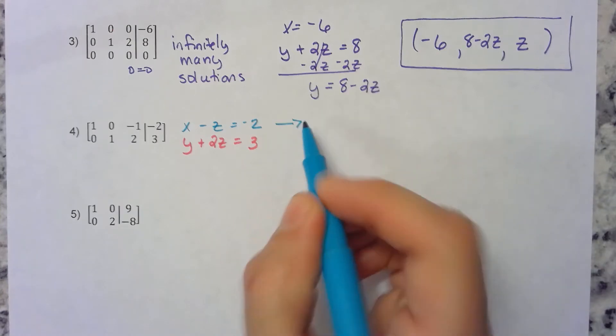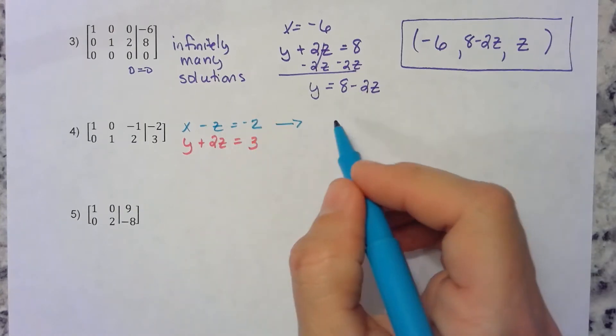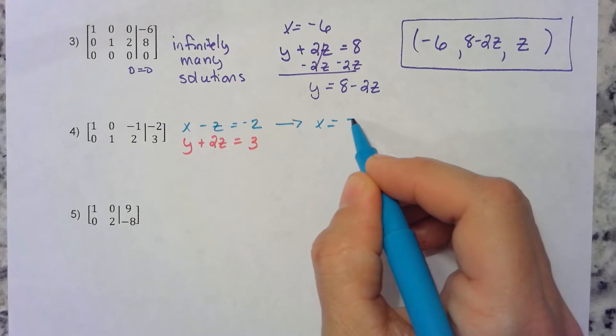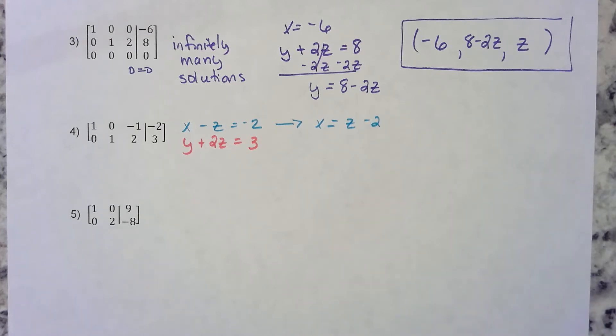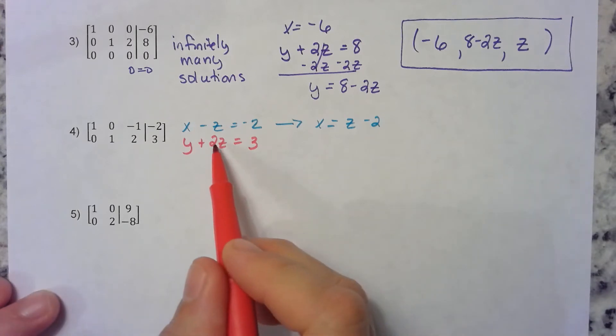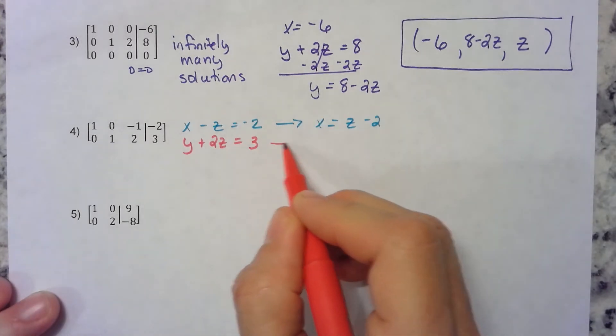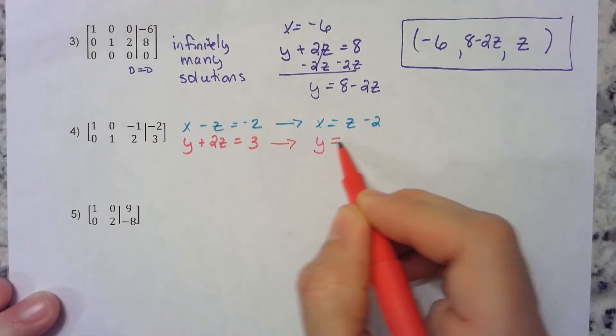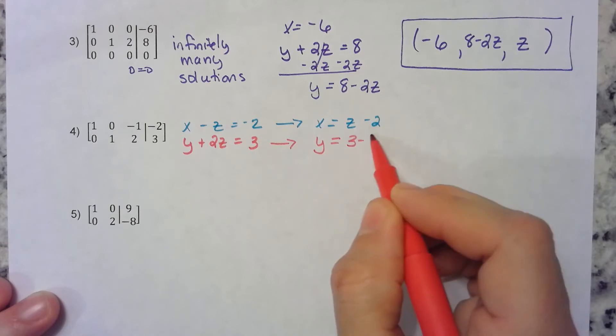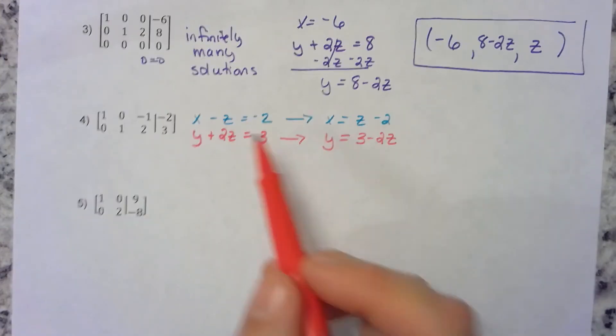Doesn't this one tell us, if we move the z over, we get x is equal to z minus 2? And this next one, if we move the 2z over, this one is saying that y is equal to 3 minus 2z. Just move the 2z over.